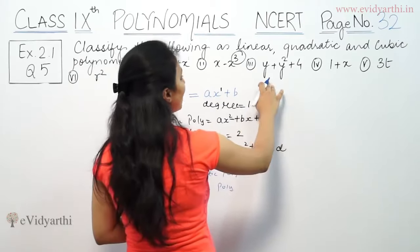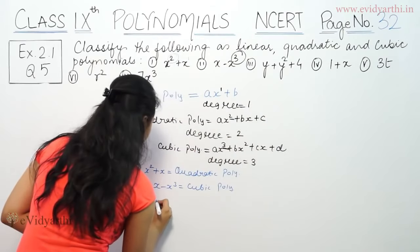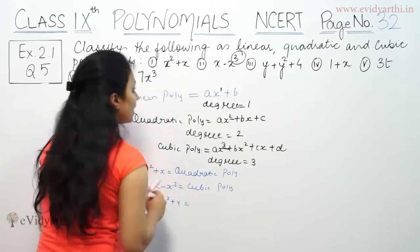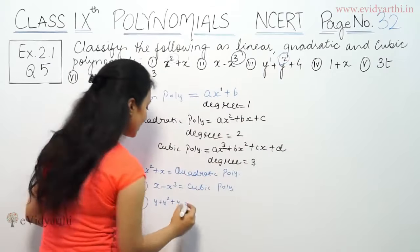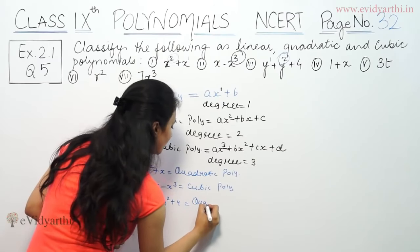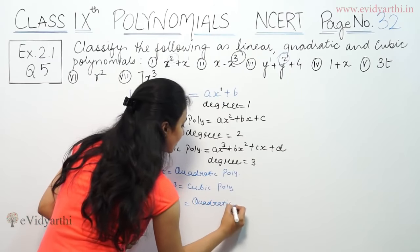Third part is y plus y² plus 4. Now we have highest power is 2, that means degree is 2. So this is a quadratic polynomial.